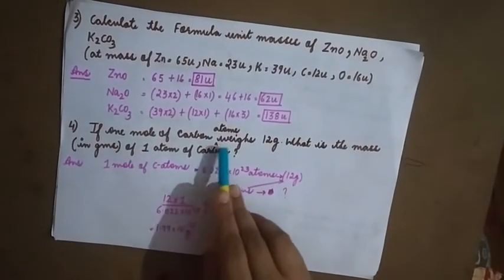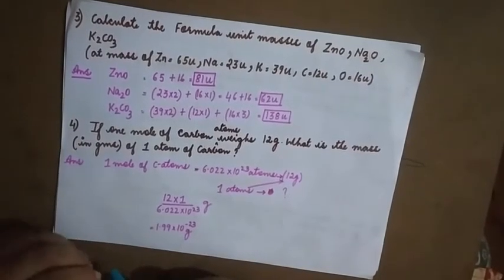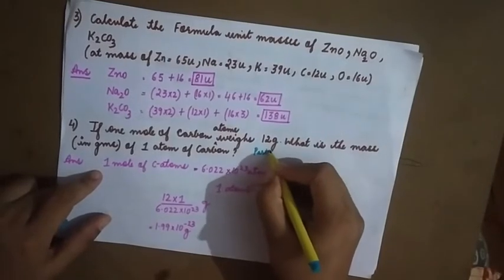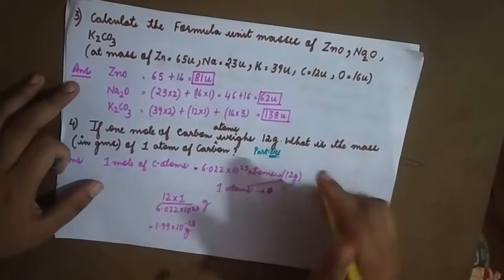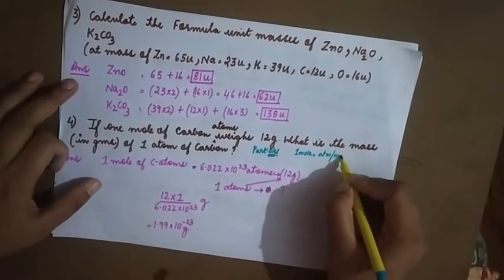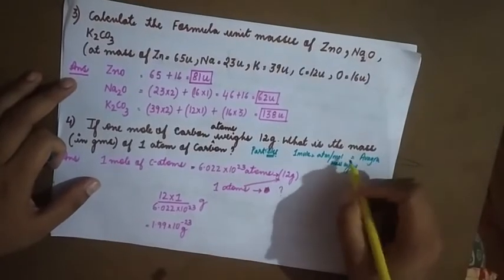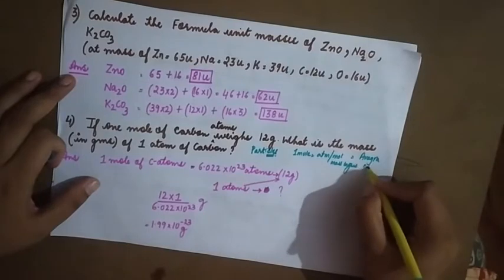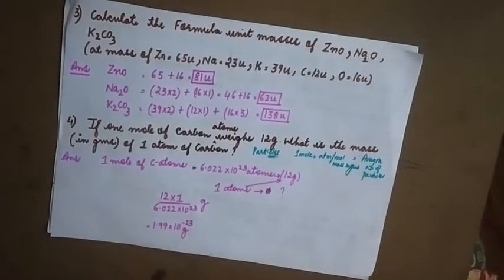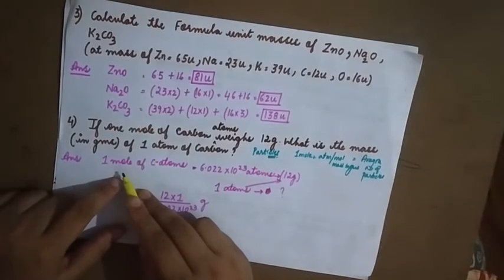Next: if one mole of carbon atoms weighs 12 grams, what is the mass of one atom of carbon? Whenever a question asks for the mass of one atom, two atoms, etc., it is asking for the number of particles. Remember: one mole equals atomic mass or molecular mass in grams, and it contains Avogadro's number of particles. Molecular mass is also known as molar mass.